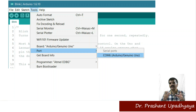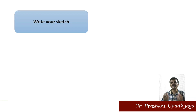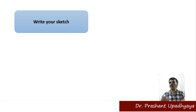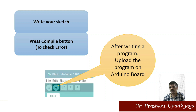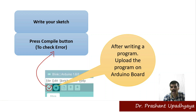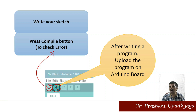In the Arduino IDE, a program is called a sketch. You write your sketch, then check it for errors using the compile button — the check symbol compiles the program. If everything is correct, you press the arrow button to upload the program to the Arduino board.